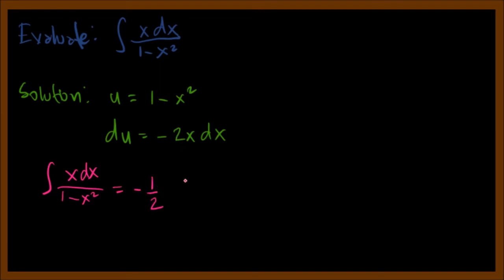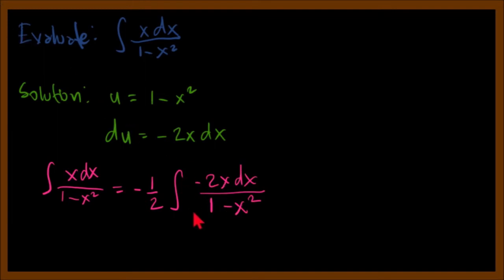By inspection, our given function lacks negative 2, because we have x dx but we need negative 2x dx. So we put the reciprocal of the lacking constant, which is negative one-half, times the integral of negative 2x dx over 1 minus x squared. This is now in the form du over u. So the answer is negative one-half times ln(1 minus x squared) plus C.